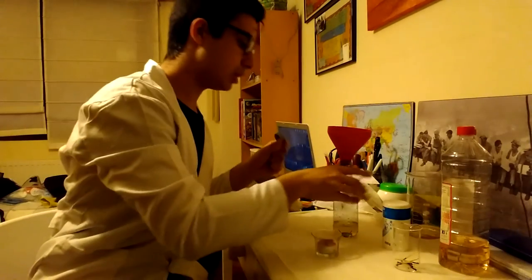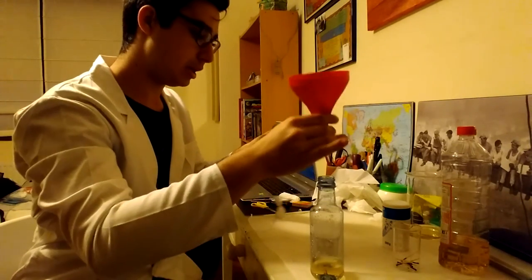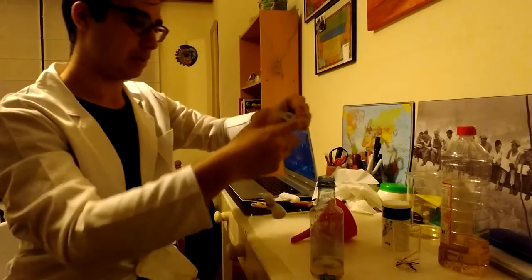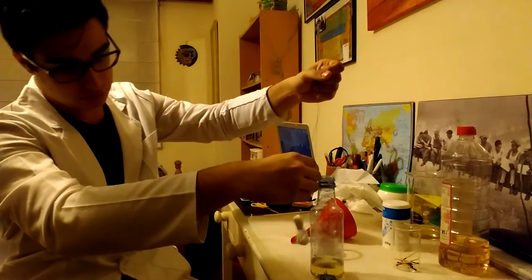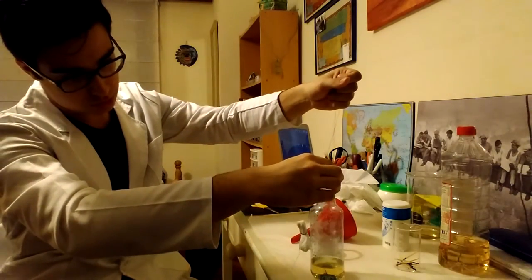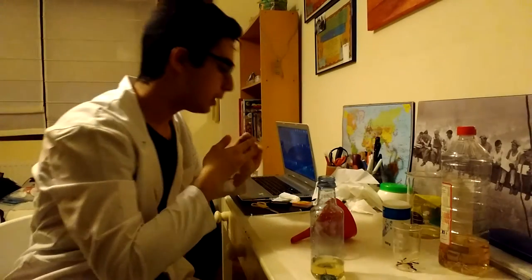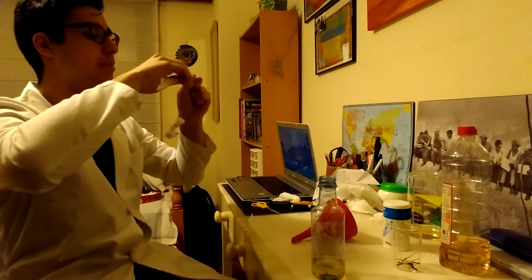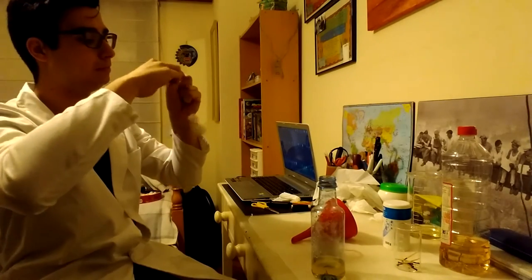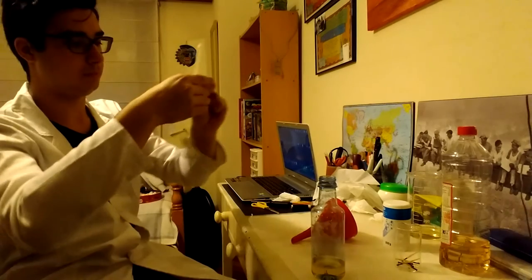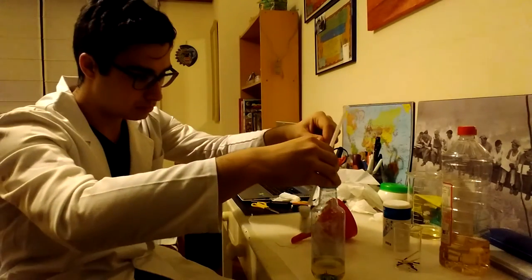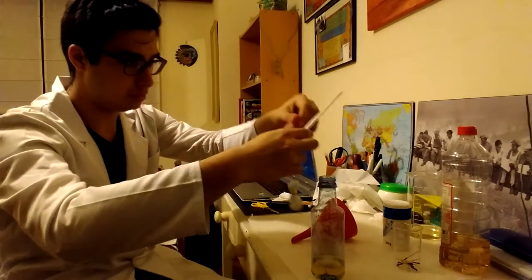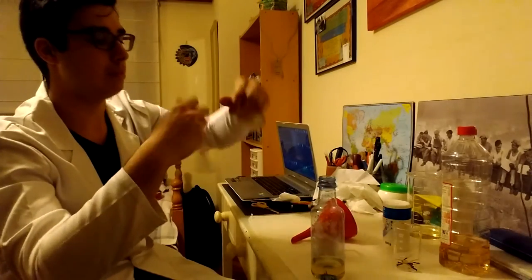¿Vale? Bien. ¡Estupendo! Llenamos la botella con el vinagre, da igual, con el... vale. Calculamos sobre qué altura más o menos. Calculo sobre esto. Y le metemos la pajita. La pajita va a ayudar a que el bicarbonato se disuelva.